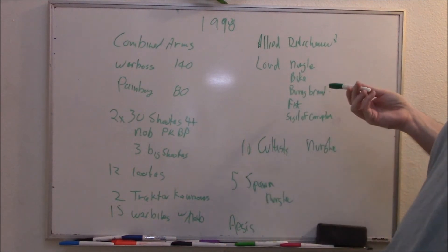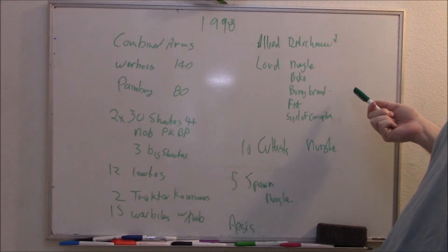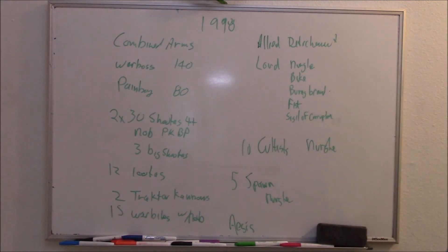Well, I guess the bike can still go 12, 24, but... Oh, how does it work? Can the rest of the unit run and the Lord turbo boost at the same time? I don't know. I think you can do that, because each model's movement is separate. But anyway...